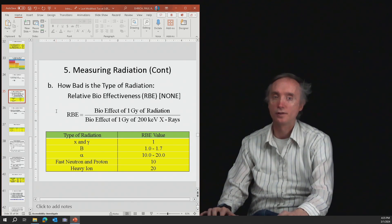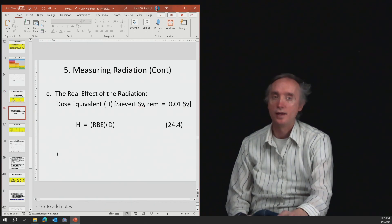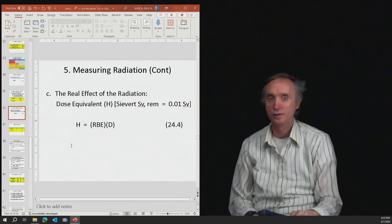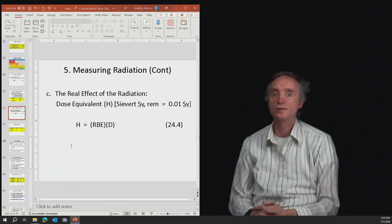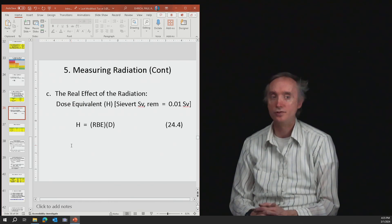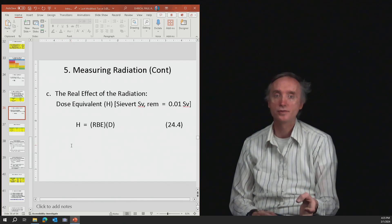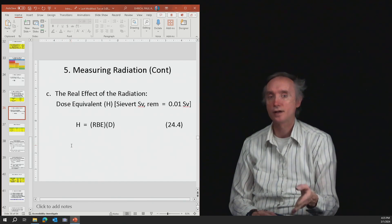Okay, so let's go to our next one here. And then you have the real effect of radiation. So the real effect is you're going to multiply your dosage, how much did you get, times how bad was the radiation. And so that's going to be called the dose equivalent, which is going to be abbreviated with an H. And you can see that the formula is take the RBE times the dosage.